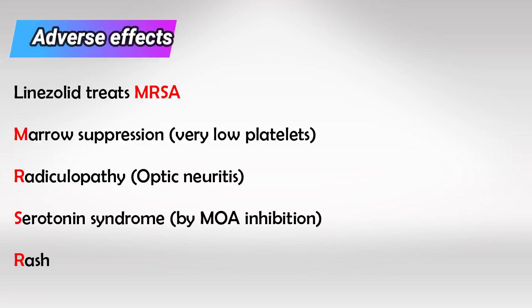We can remember the side effects from the word MRSA. M is for marrow suppression, and the platelets are the first to be affected. R is for radiculopathy, which presents as optic neuritis.